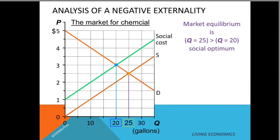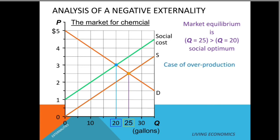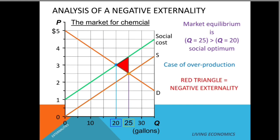The market equilibrium, which has not taken into account the external cost, is at 25 gallons — greater than the socially optimal level of 20 gallons. This market is over-producing the chemical. The red triangle showing marginal social cost from 20 gallons onwards being greater than marginal social benefit until 25 gallons represents the negative externality. To correct this, we need to reduce output from 25 to 20 gallons.